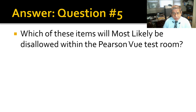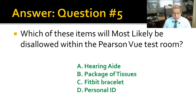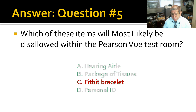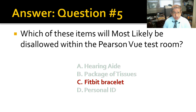Question number 5: Which of these items will most likely be disallowed within the Pearson VUE test room? This is a little tricky, but the correct answer is the Fitbit bracelet. It is an electronic device, and they are worried that electronic devices can be used to communicate with somebody outside the test room, or provide a means of copying the screen or your notes, thereby capturing specific test questions and their answers. Though a hearing aid is also an electronic device, as long as you have a prescription, that is acceptable.